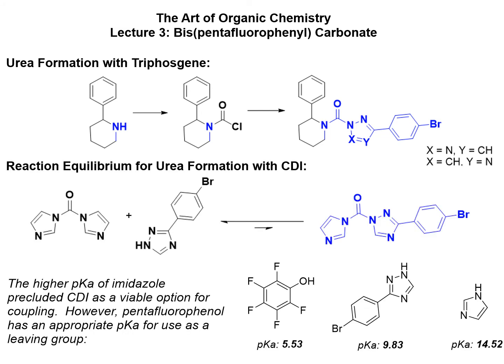The standard replacement, CDI, could not be used for most of the couplings due to the lower pKa values of desired heterocyclic nucleophiles. In this example, the equilibrium lays towards reactants. The higher pKa of remitazole precluded CDI as a viable option for coupling. However, pentafluorophenyl has the appropriate pKa for use as a leaving group.